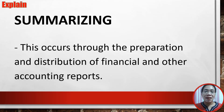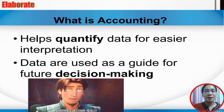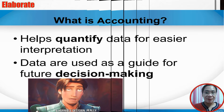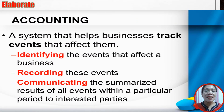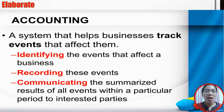Summarizing occurs through the preparation and distribution of financial and other accounting reports. This helps quantify data for easier interpretation, and data are used as a guide for future decision making. Since accounting is a process, it is a system that helps businesses track events that affect them. The major steps in accounting are: identifying, recording, and communicating.